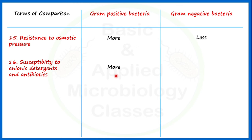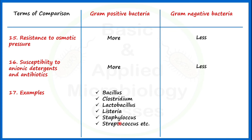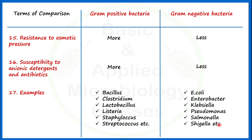Let's see examples. Gram positive bacteria include Bacillus, Clostridium, Lactobacillus, Listeria, Staphylococcus, Streptococcus, and others — the list is long and these are some of the commonly known ones. Gram negative bacteria examples include E. coli, Enterobacter, Klebsiella, Pseudomonas, Salmonella, and Shigella — these are very well-known examples of gram negative bacteria.